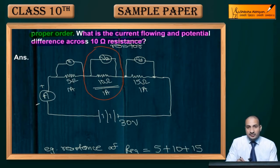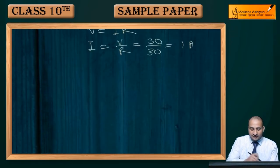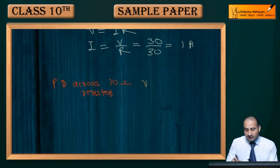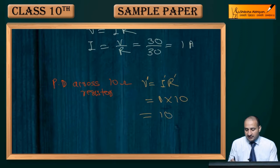And resistance is 10 ohm. Now potential difference across 10 ohm resistor, that is V is equal to IR, that is 10, 10 volts across 10 ohm resistor.